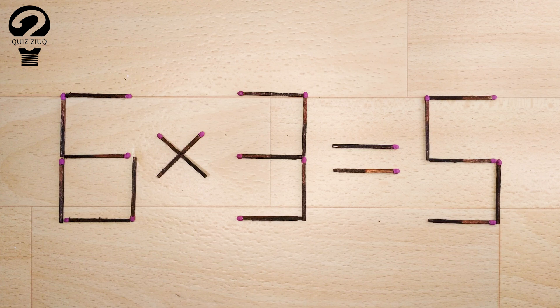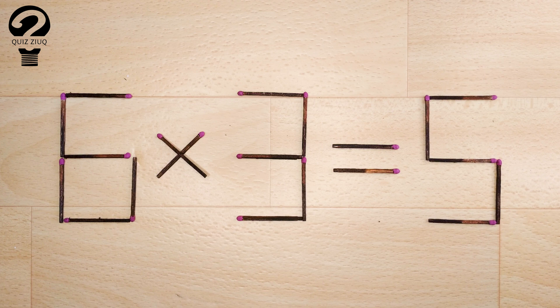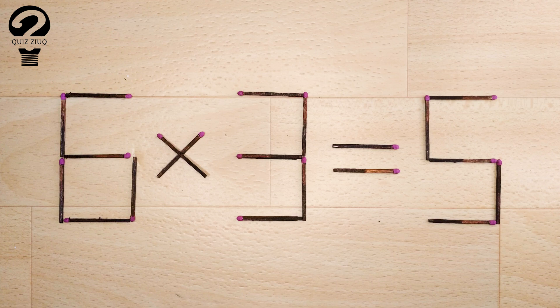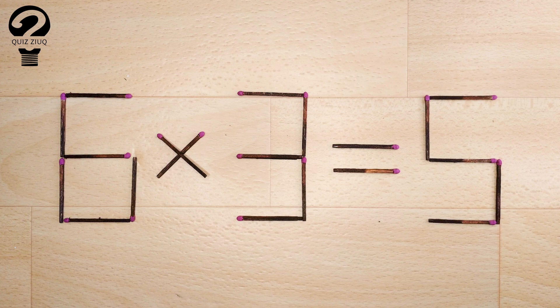Here's the next puzzle. We have the following equation: 6 times 3 equals 5. Our equation is incorrect. We need to move two matches so that our equation becomes correct.